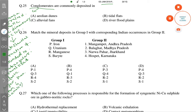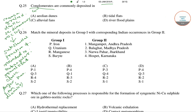Conglomerates are commonly deposited in alluvial fans, which are fan or cone-shaped deposits of sediment crossed and built up by streams.